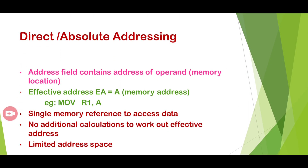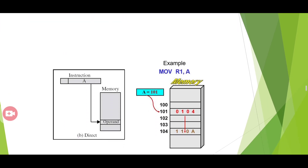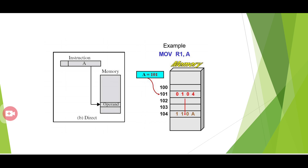In direct or absolute addressing mode, the instruction contains the effective memory address of the operand. For example: MOVE R1, A — where A is the memory address. There is a single memory reference to access the data, and no additional calculations are needed to work out the effective address since the memory address is directly given.